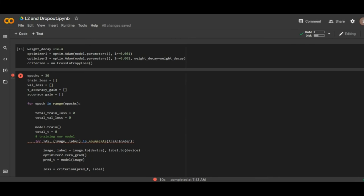Okay, so for our experiment, we are going to create two optimizers. In the first optimizer, called optimizer 1, the weight decay parameter will be set to default value of 0. In the second optimizer, the weight decay will be set to 0.0001, as you can see here.